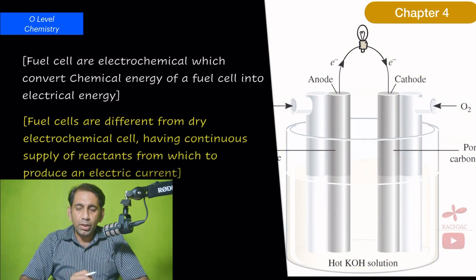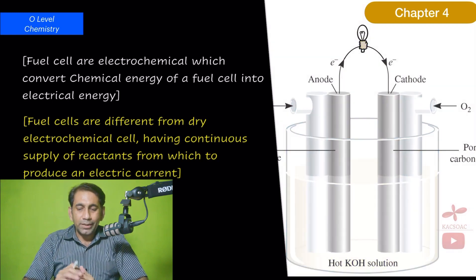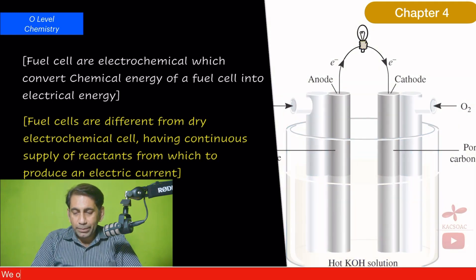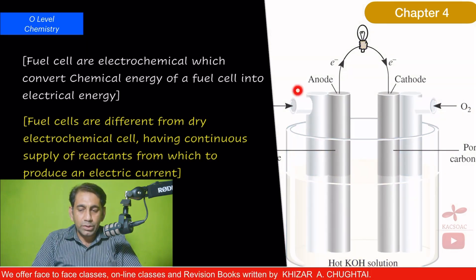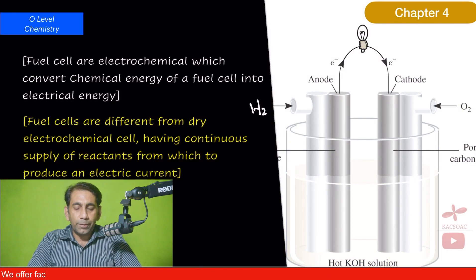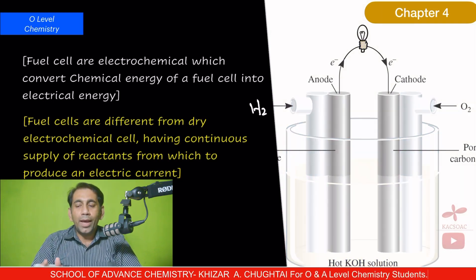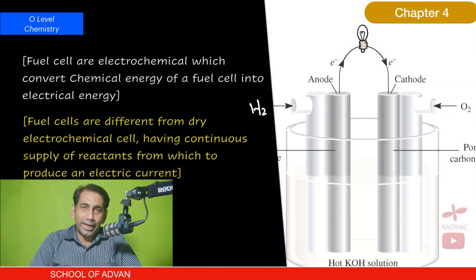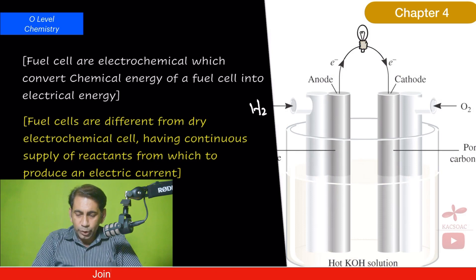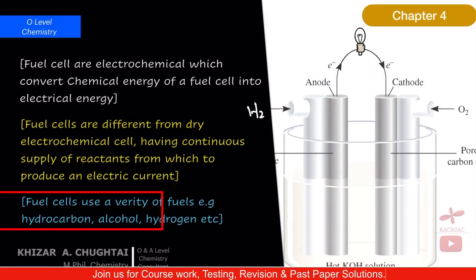Fuel cells are different from the dry cell with respect to the source of electrodes — anode and cathode. In this case we use oxygen as the cathode and hydrogen gas (H₂) as the anode. We supply these two gases continuously; they behave as electrodes — hydrogen acting as anode and oxygen acting as cathode.